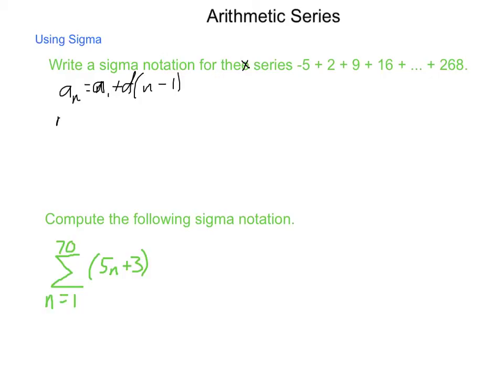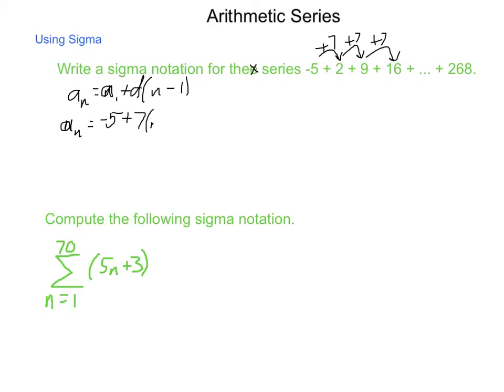In this case, our first term is negative 5. And our common difference, how do we move from negative 5 to 2, 2 to 9, 9 to 16, it's always the fact that we are adding 7. Now we need to figure out how many entries we had. To do that, we are going to begin with the basic formula that we have available and substitute in values that we know. In this case, the key part that we are looking for is how many entries do we need for this 268.